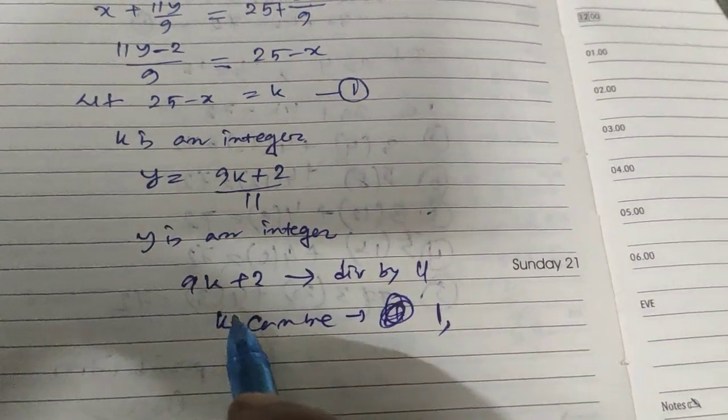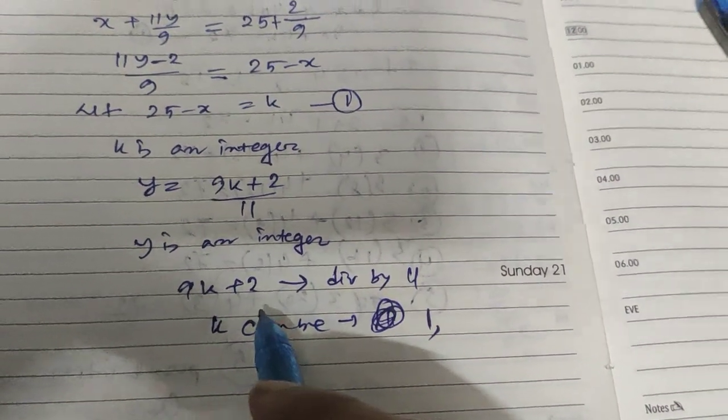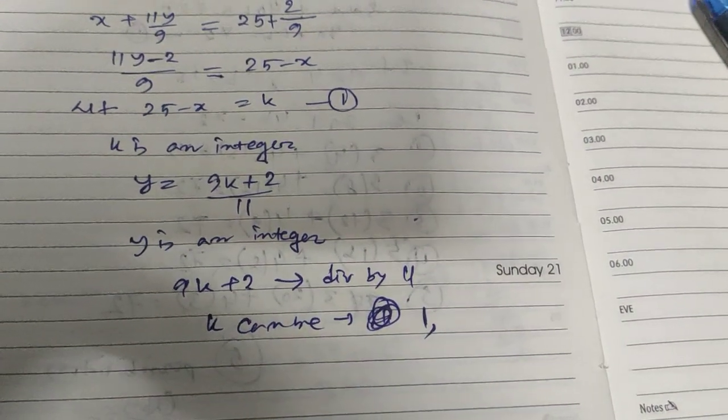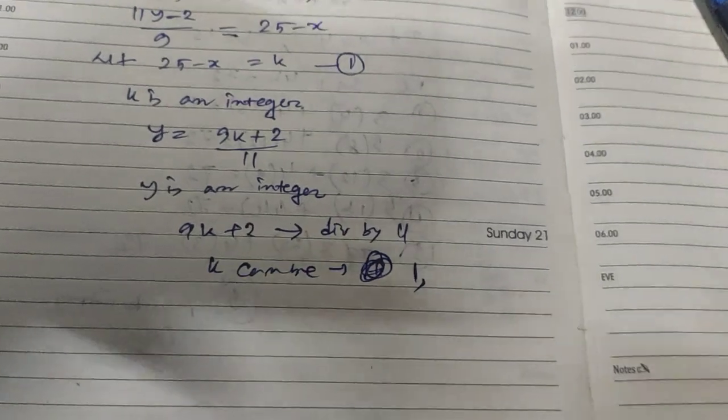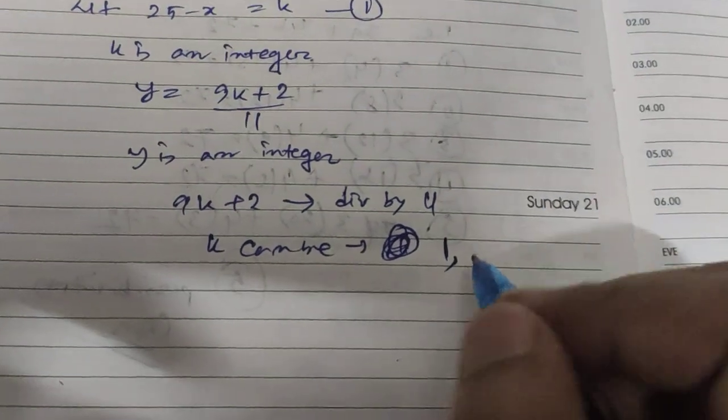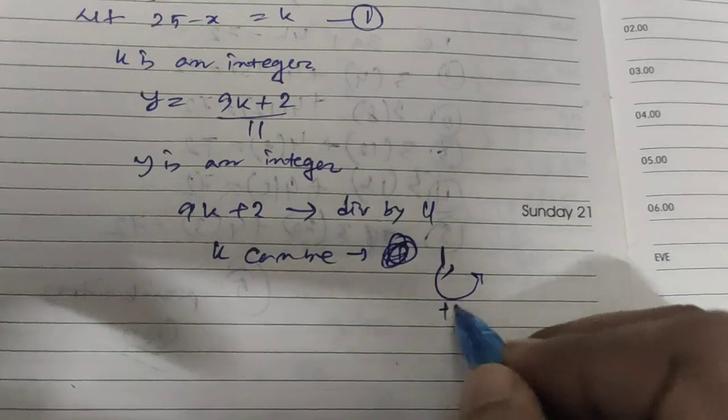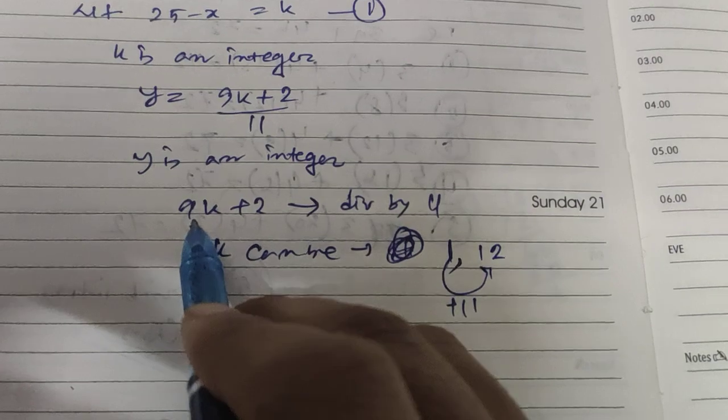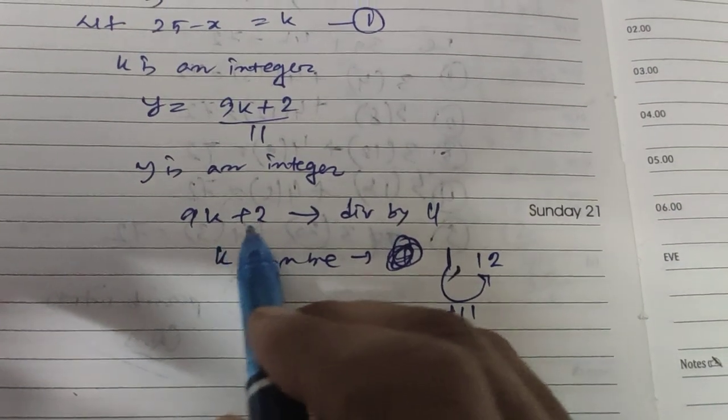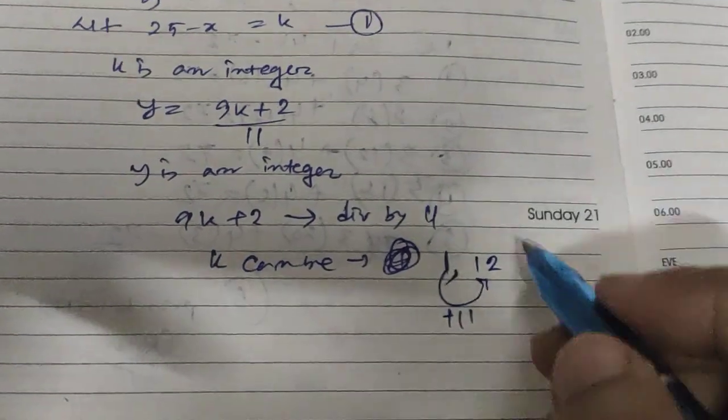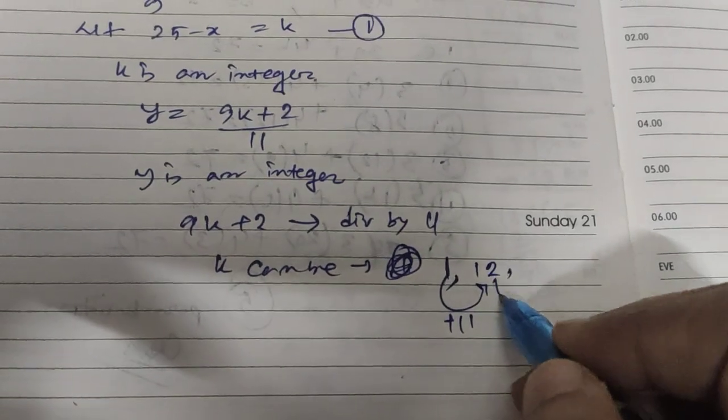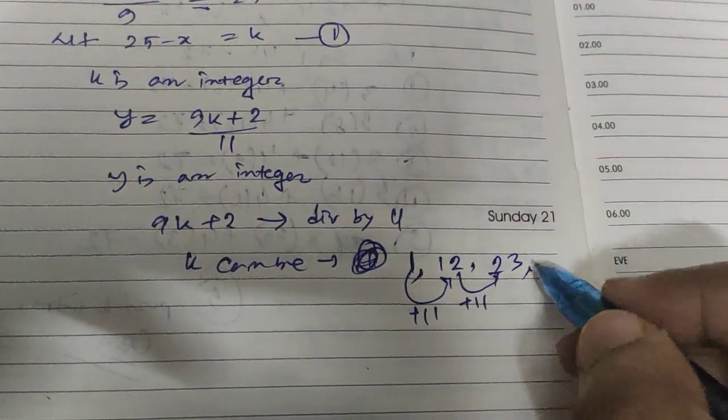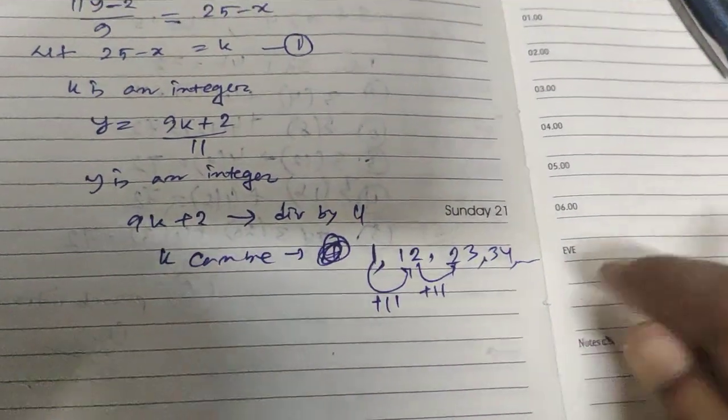Then after that, when will it be divisible by 11 again? The easy approach is just do plus 11. So 12. When you put 12 here, 12 times 9 is 108, 108 plus 2 is 110. This is also divisible. Then you will again do plus 11, so 23 here. And then 34. In this way it will be continued.